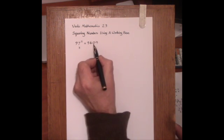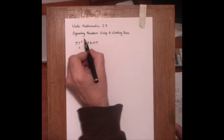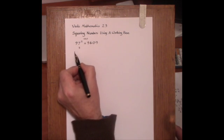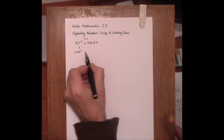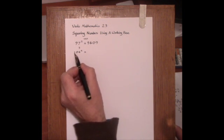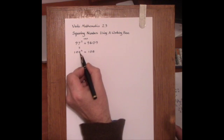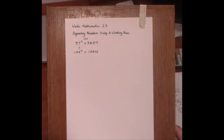Two digits are here 09, not just 9, because we're relating the 97 to 100 which has two zeros. And where the number is more than the base, like 104 squared, we take the surplus 4 and add it on making 108, and then set up the square of the surplus 16 like so.